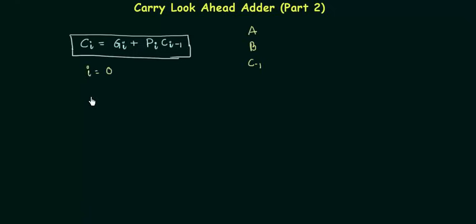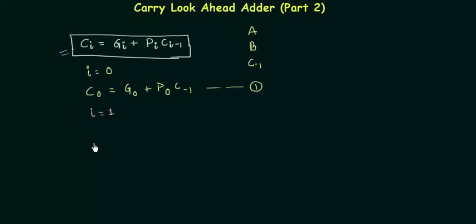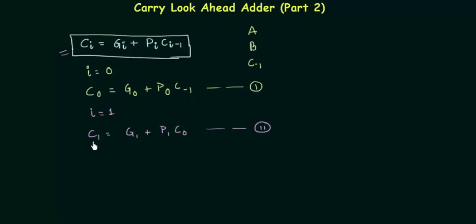Let's use this equation. If I put i equal to zero, we get C0 equal to G0 OR P0·C-1. Let's call this equation one. Now putting i equal to one, we get C1 equal to G1 OR P1·C0. Let's call this equation two. We want all carries C0, C1, C2, and C3.